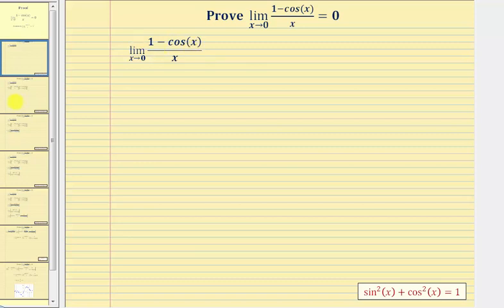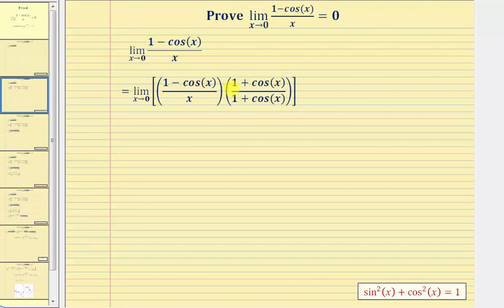Our first step is to multiply by the quantity one plus cosine x over the quantity one plus cosine x. We're going to leave the denominator in factored form, but we will multiply out the numerator. And we'll have four products here.